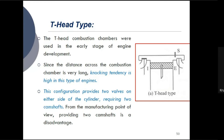The T-head combustion chamber was used in the early stages of engine development. Since the distance across the combustion chamber is very large, and a longer flame travel distance increases knocking tendency, the knocking tendency is high in this type of engine. This configuration provides two valves on either side of the cylinder, requiring two camshafts to operate them. From a manufacturing standpoint, providing two camshafts is a disadvantage as it increases the weight of the engine.